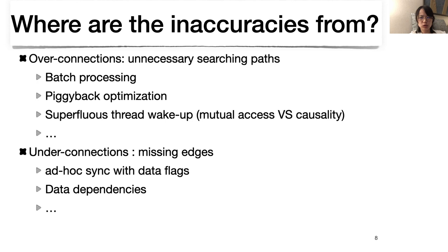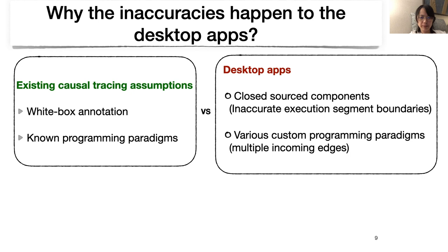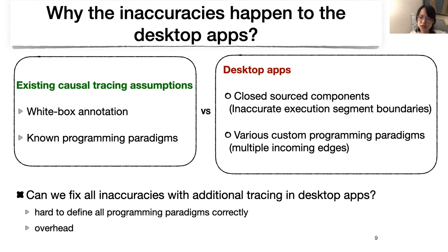Why do inaccuracies occur in tracing desktop apps? Because existing causal tracing tools usually assume the software is a white box and that all program paradigms are recognized correctly. However, desktop apps usually have closed-source components and apply custom program paradigms. So can we fix all inaccuracies with additional instrumentation? In principle yes, but it's not practical, because supporting all program paradigms correctly is hard, and the overhead of excessive instrumentation is not acceptable for desktop apps, which require responsiveness.